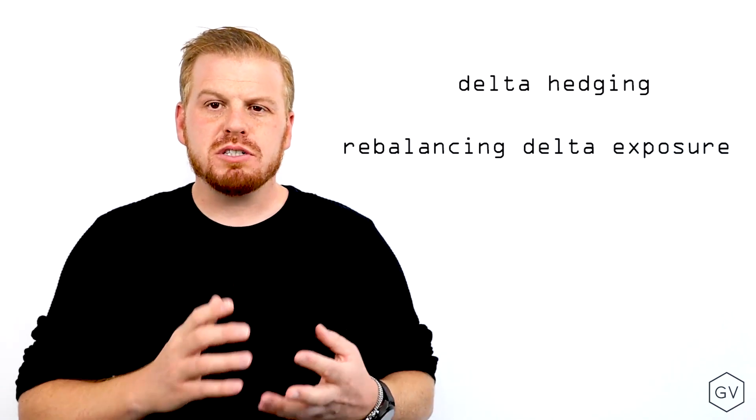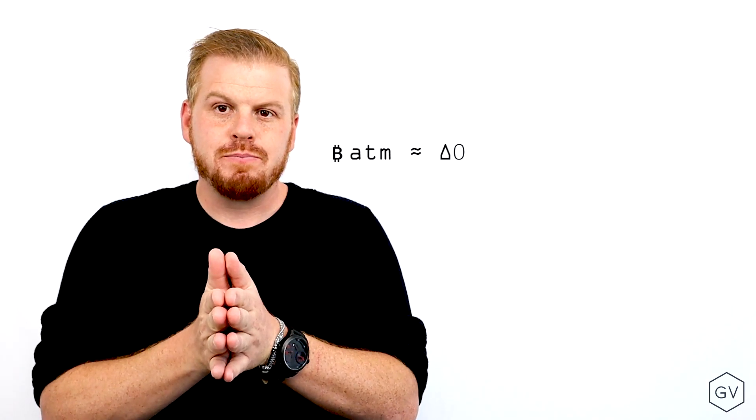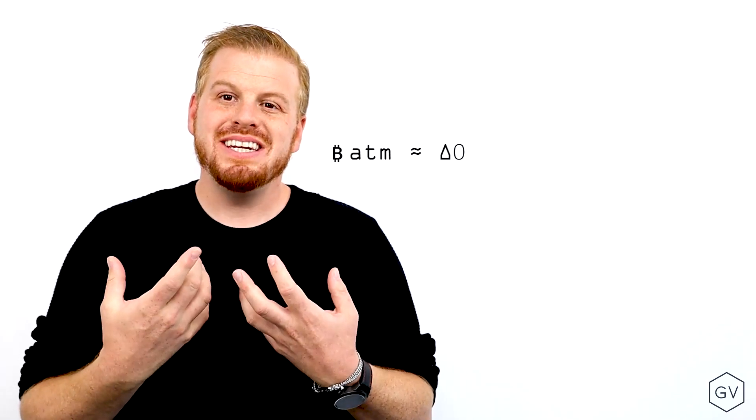So when you first put on this move contract at the money, or when the strike is first struck, the delta exposure is going to be near zero.